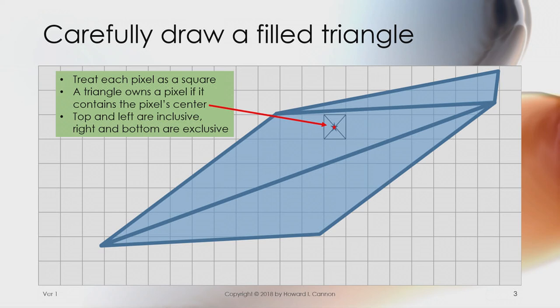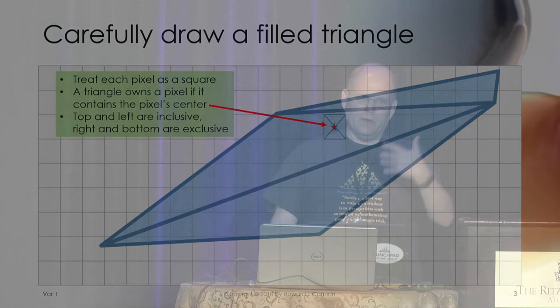think of it as a square and say we're going to just define that each triangle owns the pixel if that center point is within that triangle, and we just define clear rules about how we can do that. It turns out we can do that in floating point too, and we don't have to worry about as long as the rules are clear.